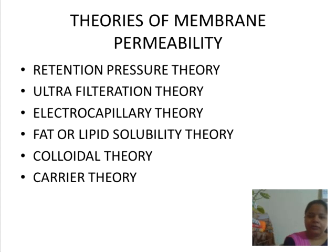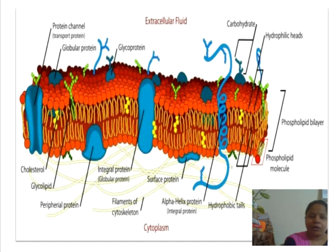The carrier theory diagram shows how protein channels allow solute molecules to pass across the membrane. The structure of the membrane includes the phospholipid bilayer, phospholipid molecules, surface proteins, and integral (globular) proteins. It also shows how carbohydrates enter with the help of these channels. This confirms that the carrier theory is the most accepted theory for explaining membrane permeability.